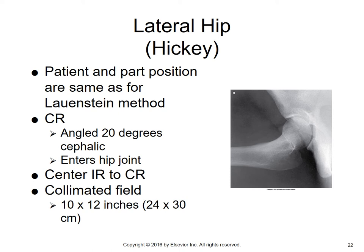The Hickey method is very similar to the Lowenstein method — the patient positioning is the same. The only difference is an angulation of 20 degrees cephalic. The central ray is angled 20 degrees cephalic, entering the hip joint, and the IR is centered to the CR. The collimated field is 10 by 12 inches. For the lateral hip using Lowenstein, Hickey, and modified Cleaves methods, we can put the cassette crosswise because the femur is coming out away from the body.